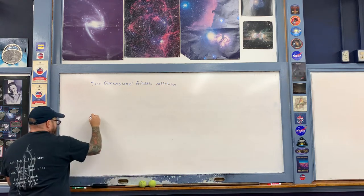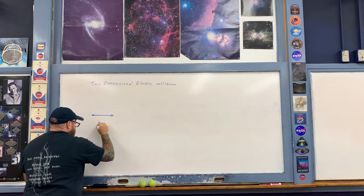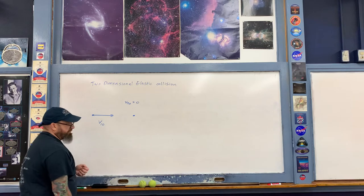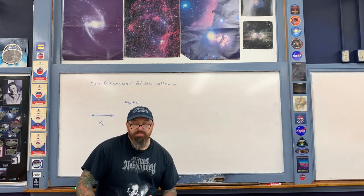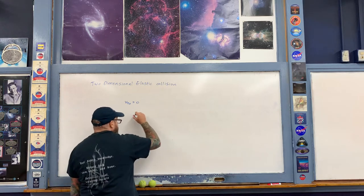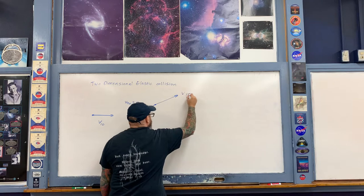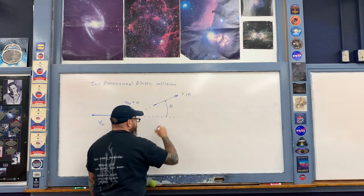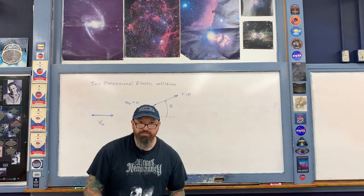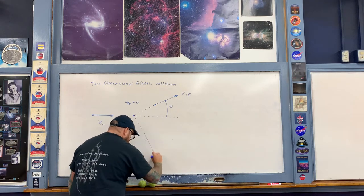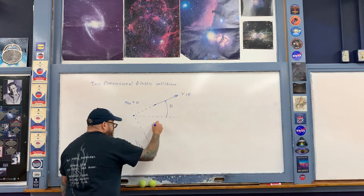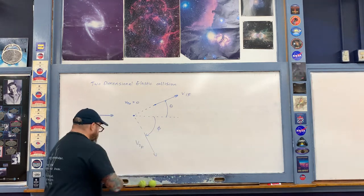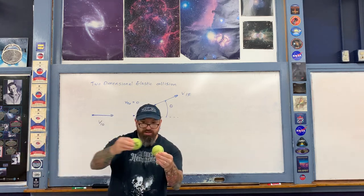We always draw it in the following manner. Here's the first object, initially moving along the x-axis with initial velocity v1 naught. Here's the second object, initially at rest. The two objects glance off of each other, so the first object scatters with a final velocity v1 final, forming an angle theta with respect to the positive x-axis — the scattering angle. The second object scatters with final velocity v2 final, forming an angle phi with respect to the positive x-axis.